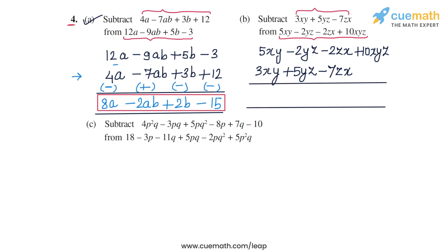Once again, the sign of each term in the second expression will get reversed. So 3xy will become minus 3xy, and we'll have 5xy minus 3xy which is 2xy. Then plus 5yz will become minus 5yz, and we will have minus 2yz minus 5yz which is minus 7yz. Then minus 7zx will become plus 7zx, so we have minus 2zx plus 7zx which is 5zx.